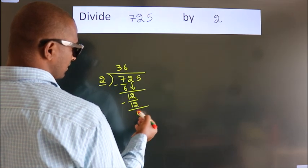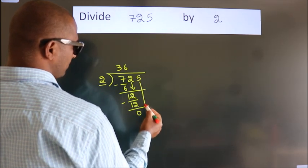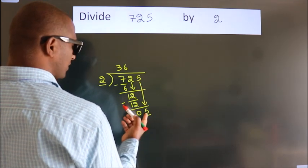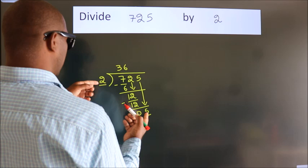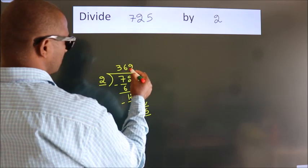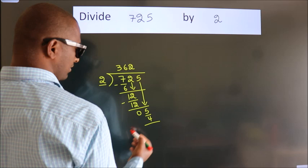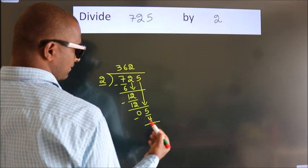After this, bring down the beside number, so 5 down, so 5. A number close to 5 in 2 table is 2 2s 4. Now we subtract, we get 1.